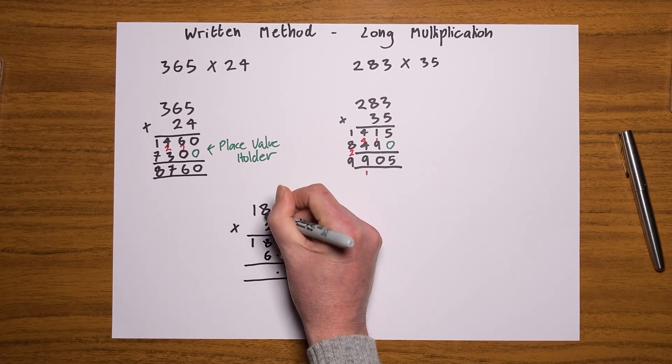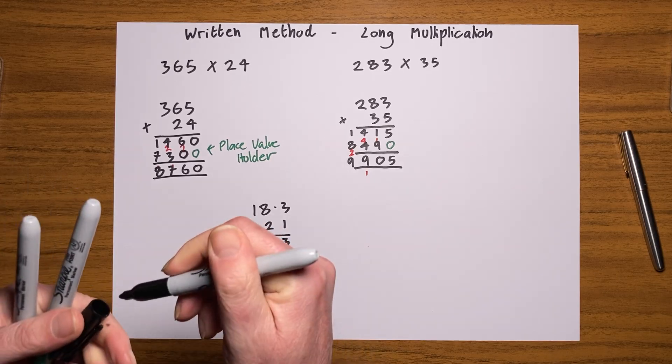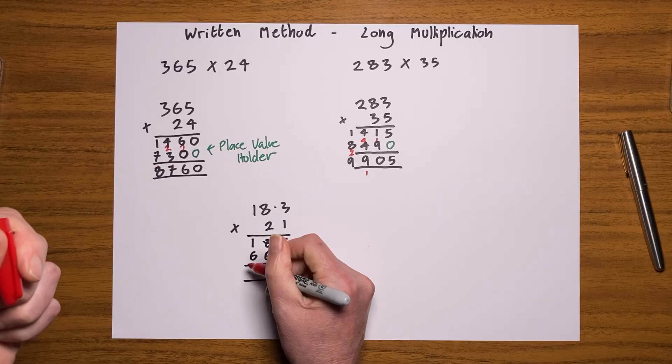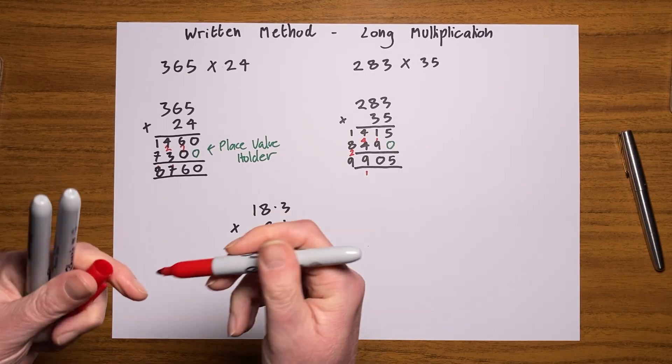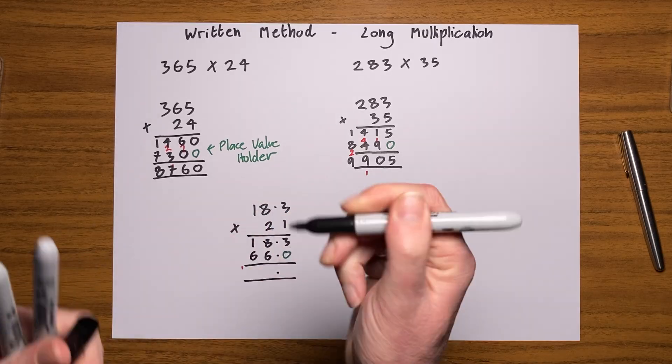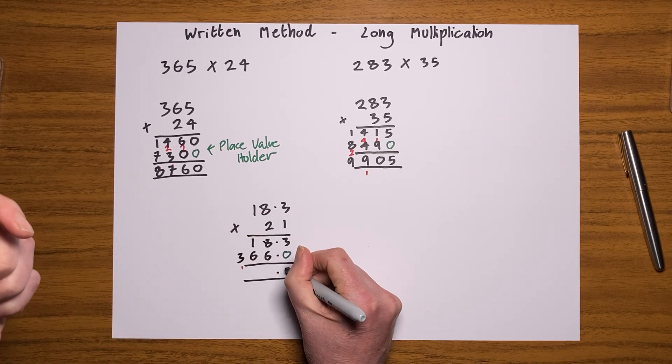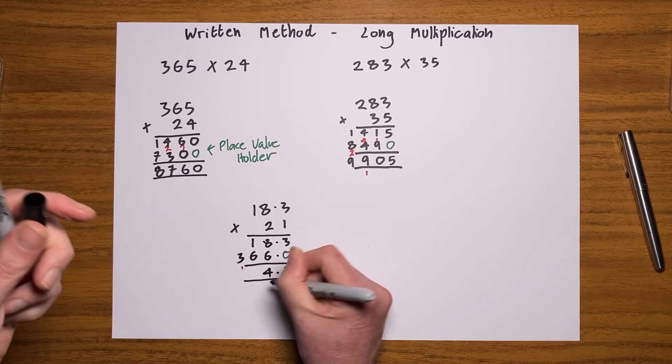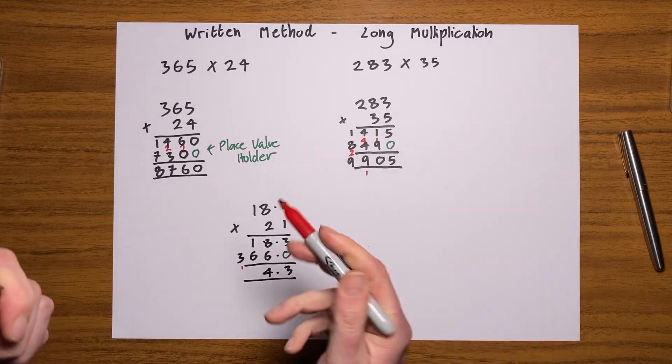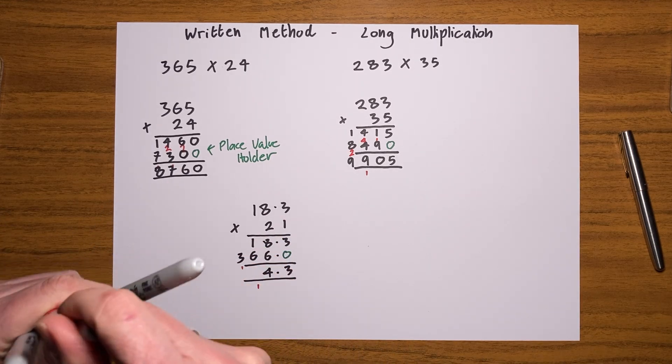Put my place value holder in here and let's go and do the other line. All right, so three twos are six, eight twos are 16, so I'll put the six in and carry my one, and then I'll go one times two is two, add that one is three. Add them together. Three and zero is three, eight and six is 14, put the four in, carry the one. One and six is seven, add that one is eight.